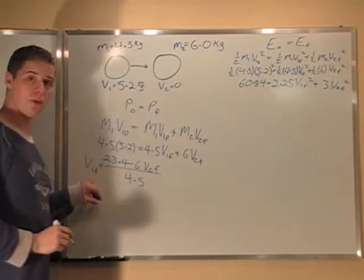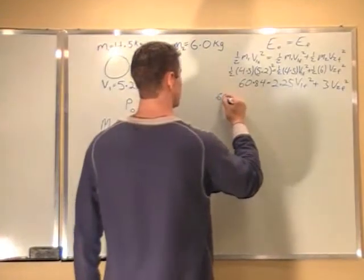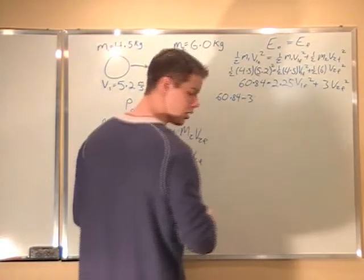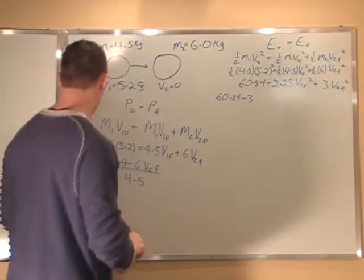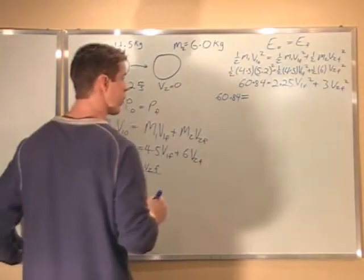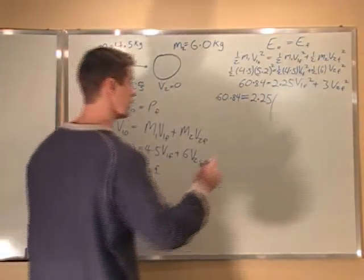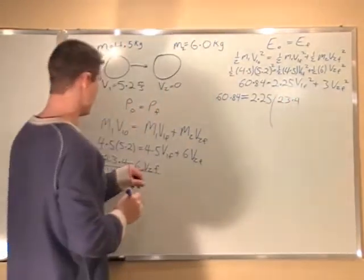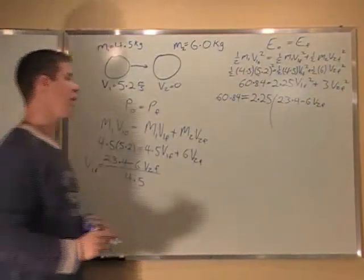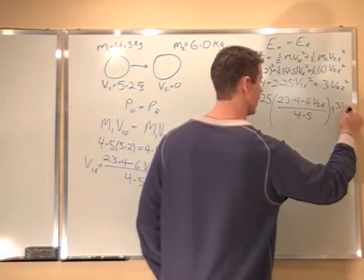Now I have an equation for V1 final that I'm going to throw in this V1 final here. So I got 60.84 minus 3, I don't want to move that over. I'll just leave that on that side for now. Actually I'll just say equals 2.25 times V1 F squared. So V1 F, I'll just plug this in. It's 23.4 minus 6 V2 F divided by 4.5 plus 3 V2 F squared.